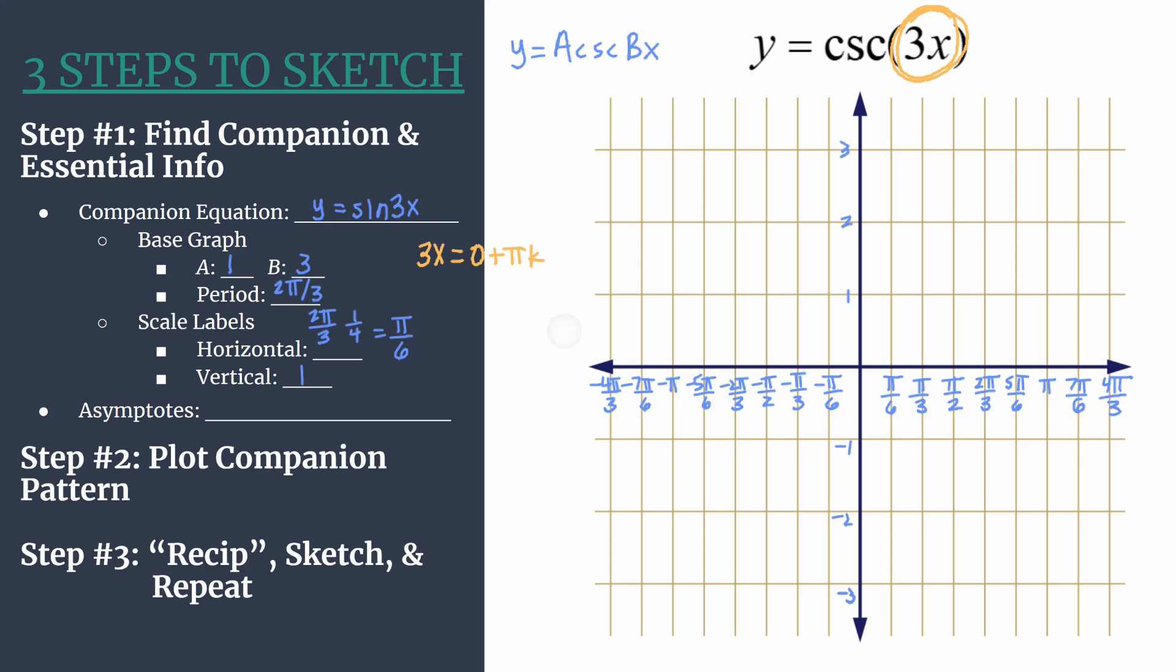Let's solve for x. We're going to divide everything in this equation by 3, and write this equation in our asymptotes equation spot. So we'll have x equals 0 plus pi over 3k.